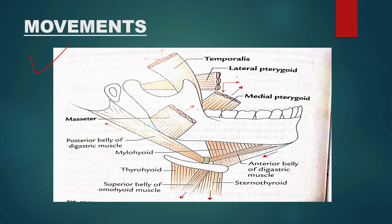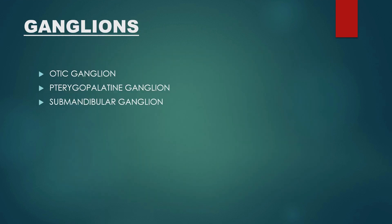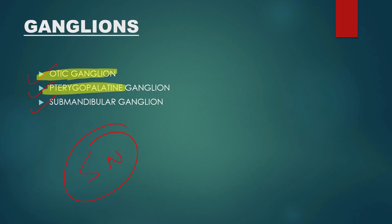Next is the movement section. Along with the chart, you can draw this movement diagram. Next, we have the ganglions. Ganglions mostly come as short notes. The most frequently asked ganglions are the otic ganglion and the pterygopalatine ganglion. The submandibular ganglion is not as important, but the otic and pterygopalatine ganglion are the most important ones.